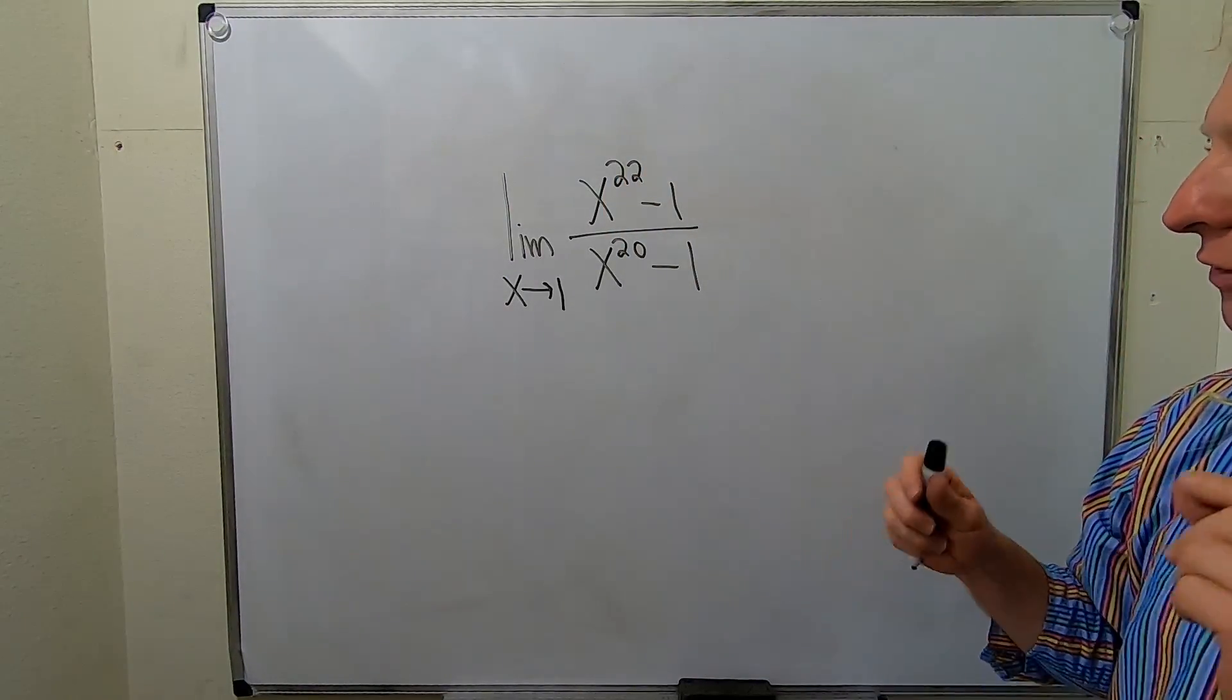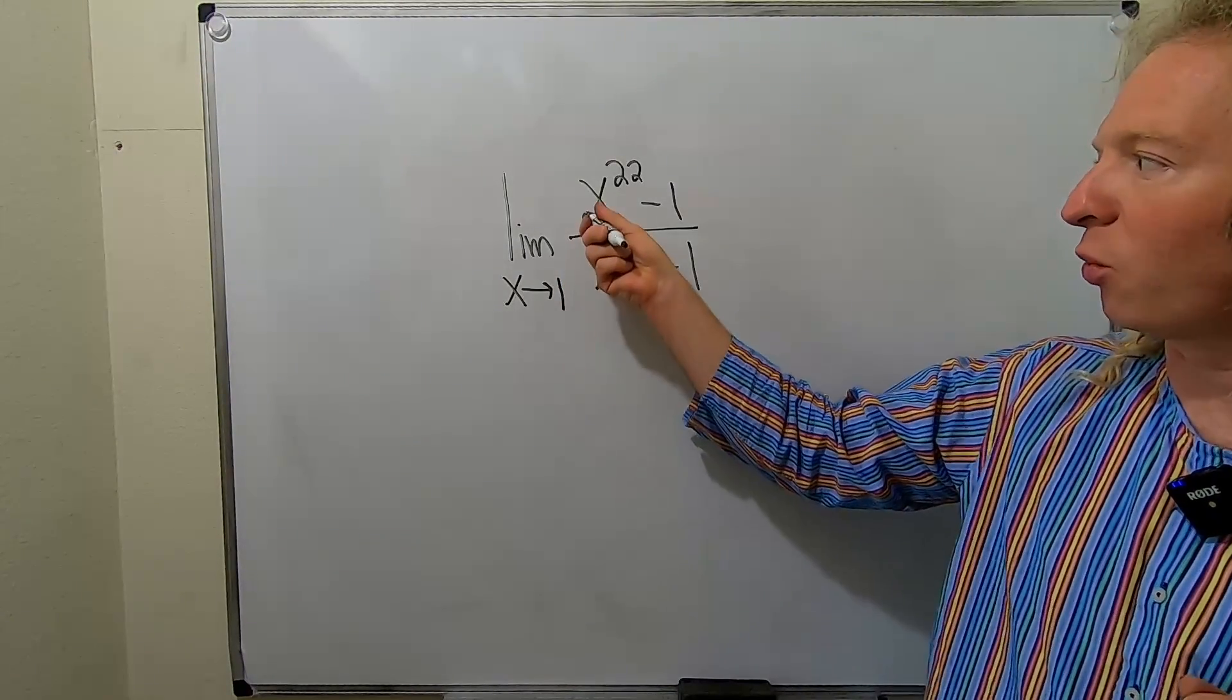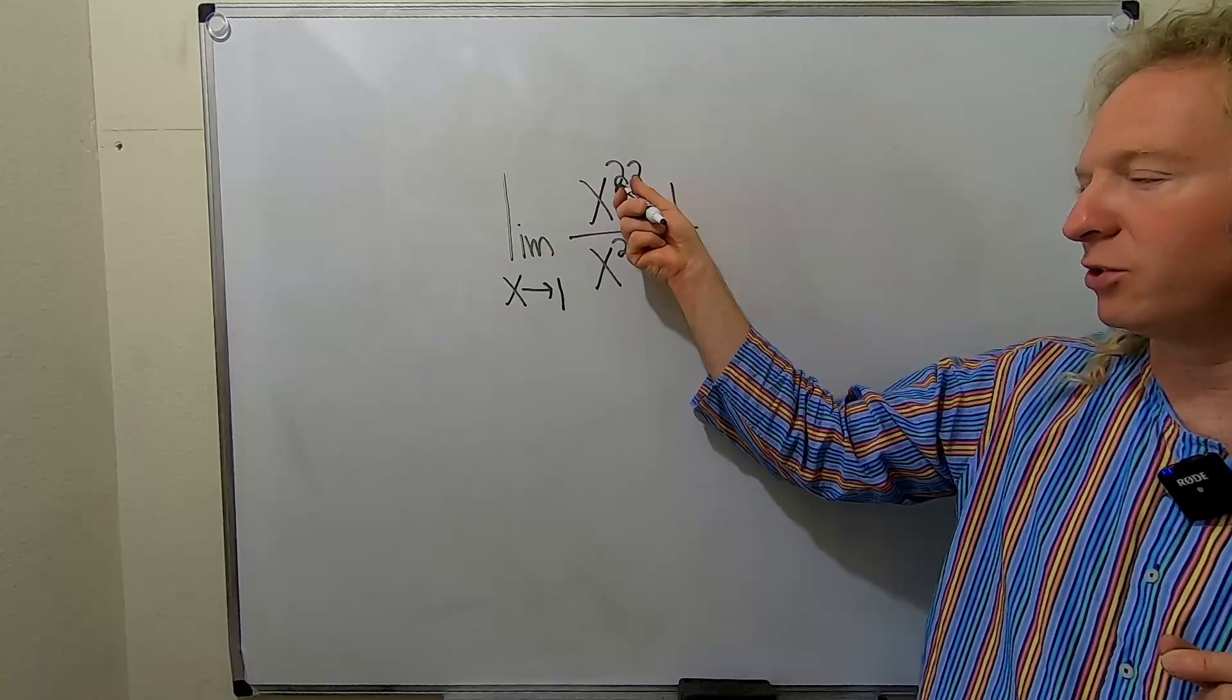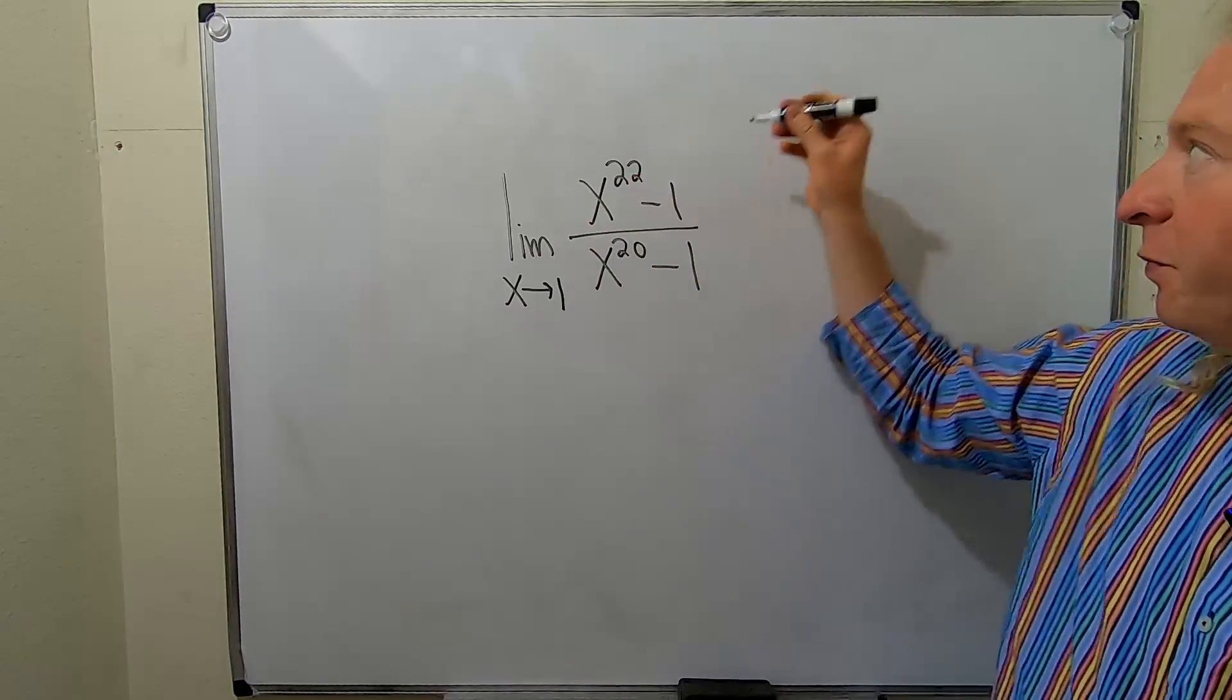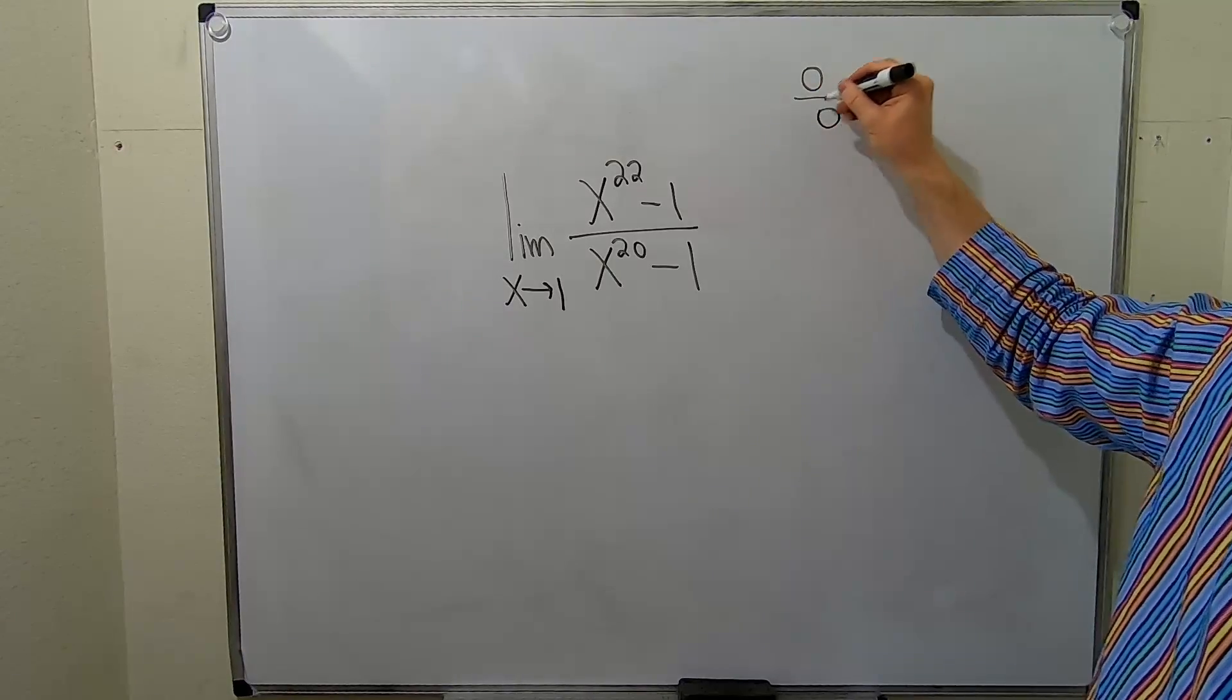So whenever you're evaluating a limit, the first thing you should always do, at least mentally, is plug in the number. You'll notice if you plug in 1 here, you get 1 to the 22 minus 1, so you just get 1 minus 1, so you get 0. If you plug in 1 on the bottom, you also get 0. So you have 0 over 0.